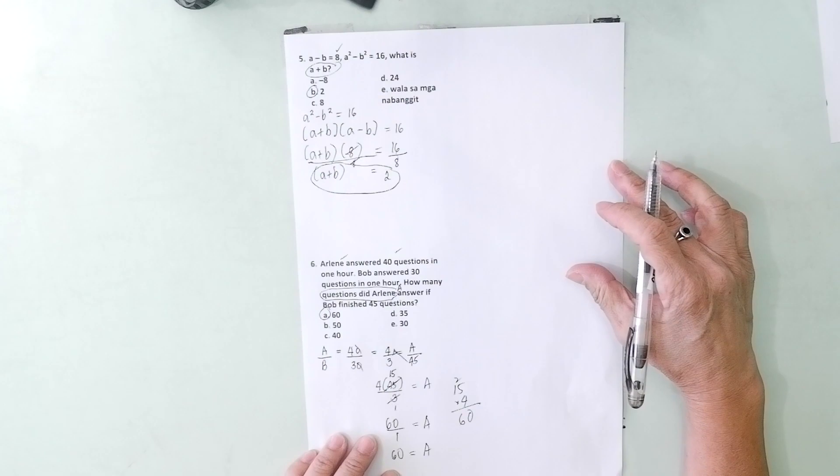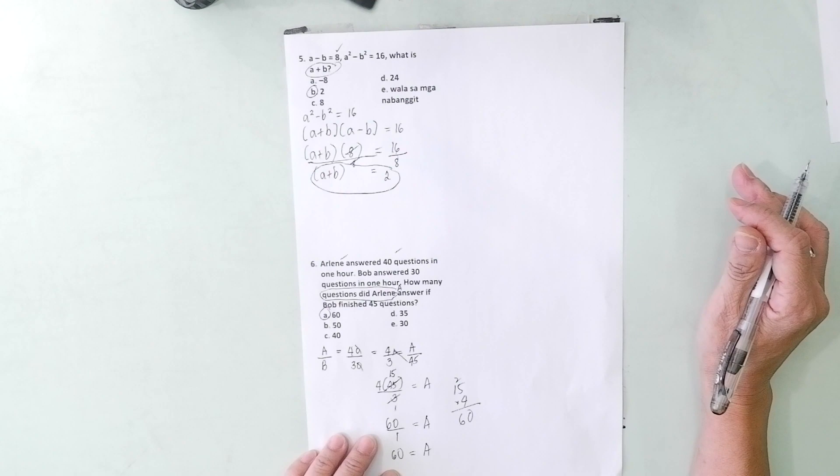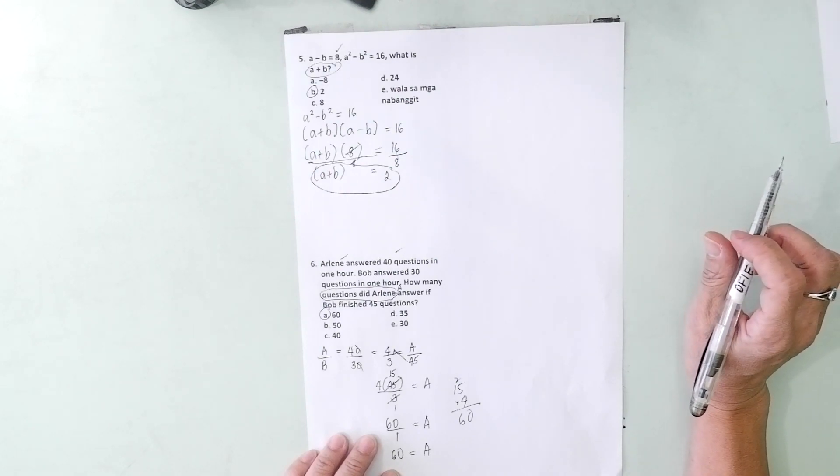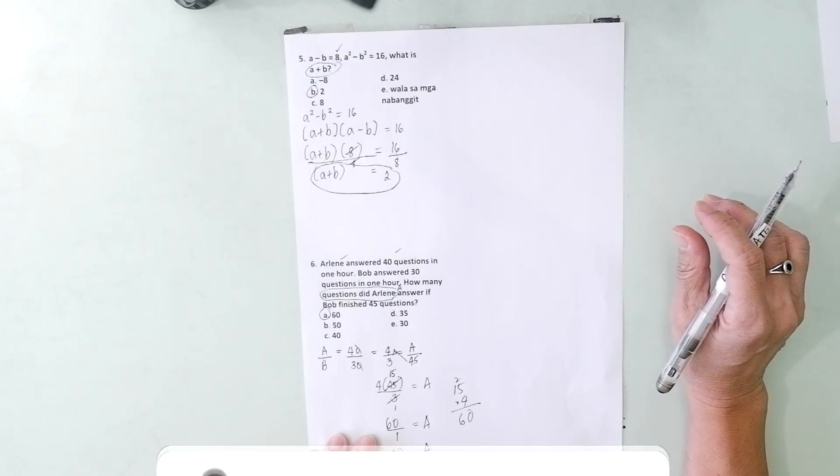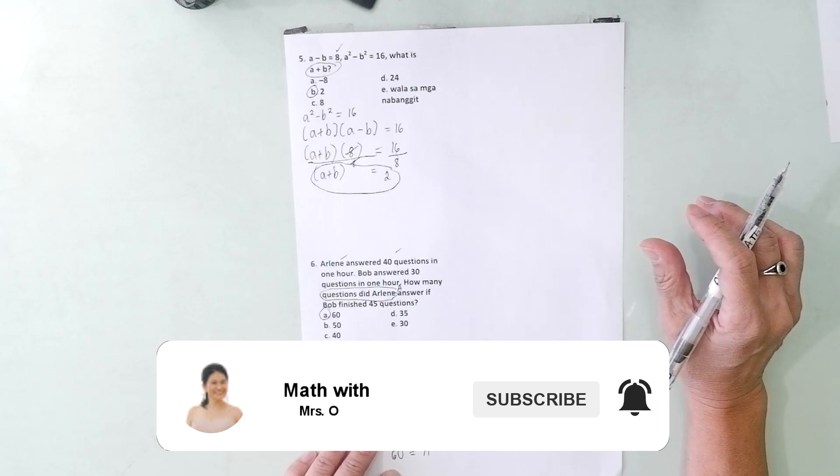We're done with part 6. Thank you for watching. Always remember to add kindness, subtract judgment, multiply understanding equals Mrs. O's good life equation. Subscribe now, smash it and hit the bell button. Thank you.